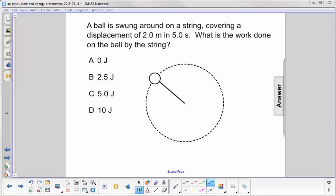A ball is swung around on a string covering a displacement of 2.0 meters in 5.0 seconds. What is the work done on the ball by the string? This is almost a trick question.